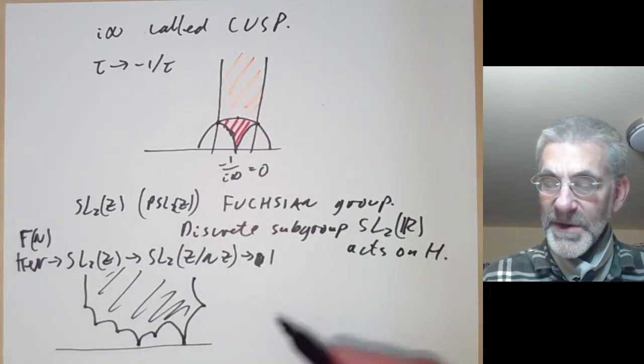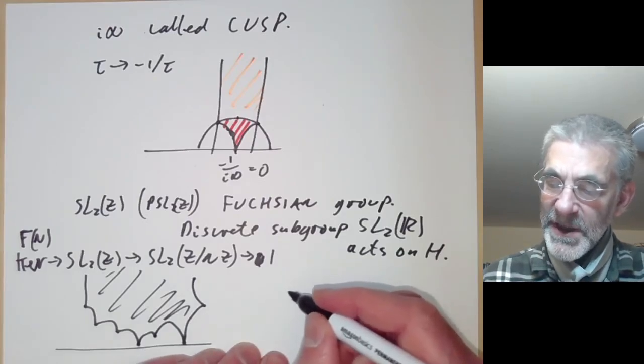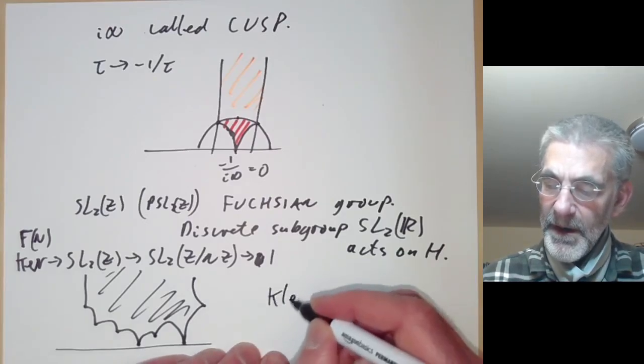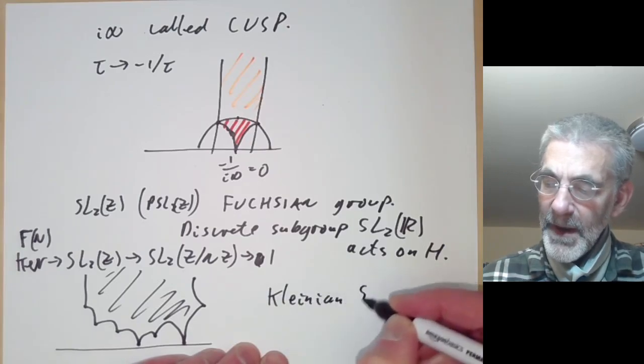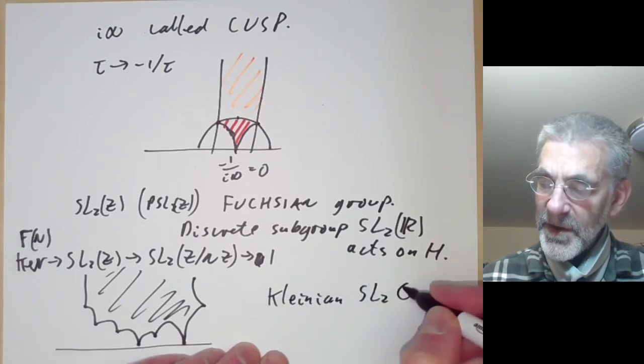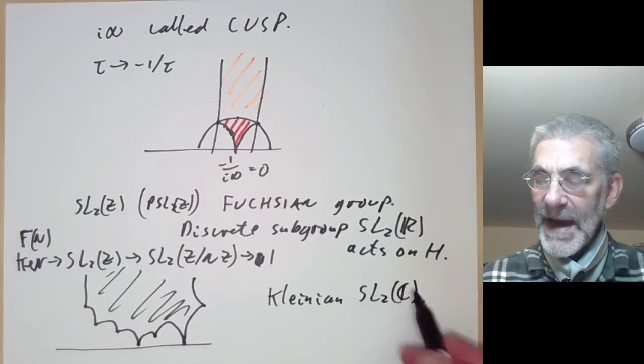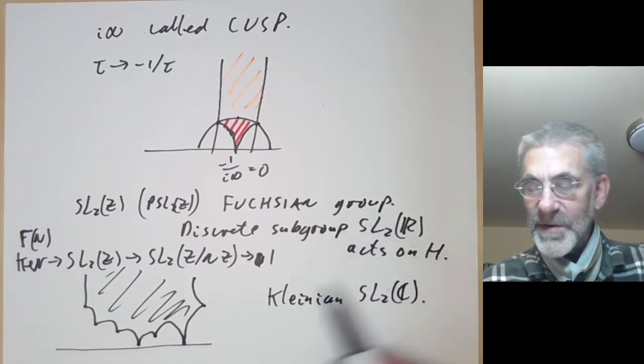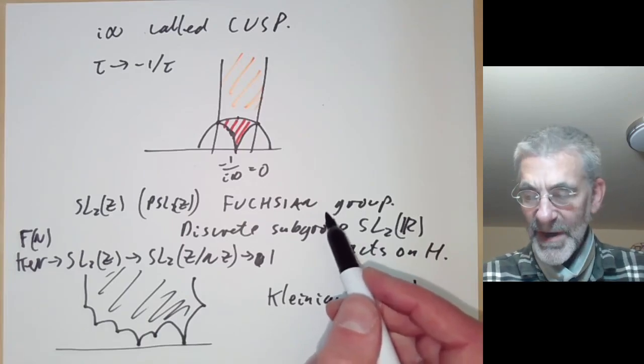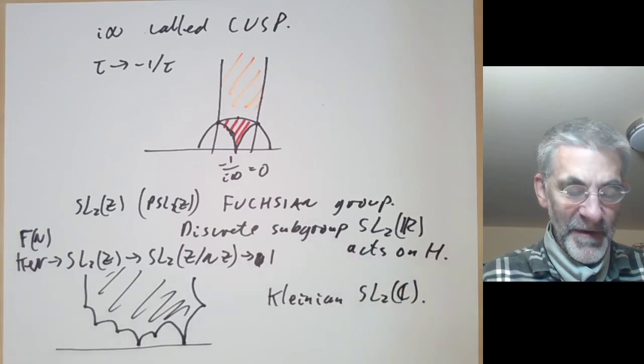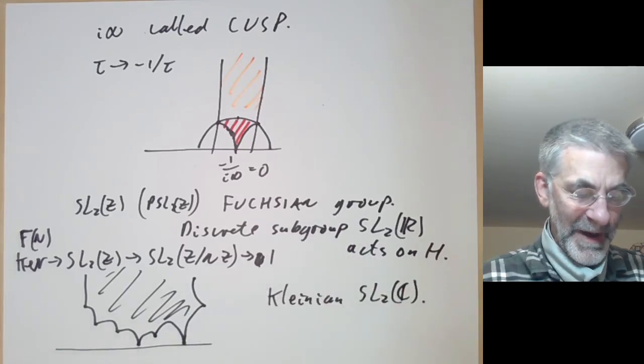There are also things called Kleinian groups which are discrete subgroups of SL2(C), and this acts on the Riemann sphere. And there's a whole theory of Kleinian groups which is in some ways analogous to the theory of Fuchsian groups, but we're not going to talk about those much.